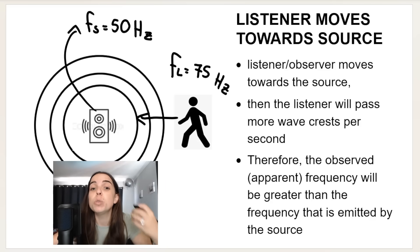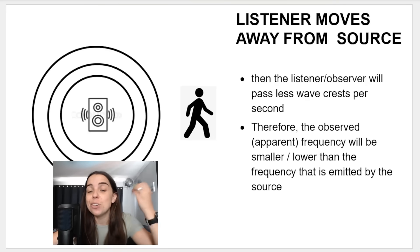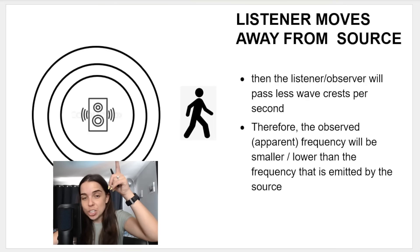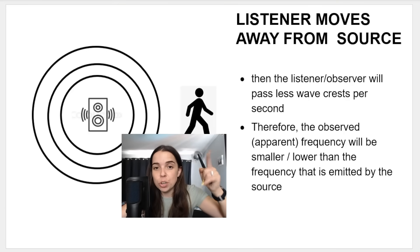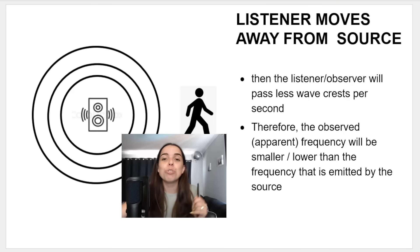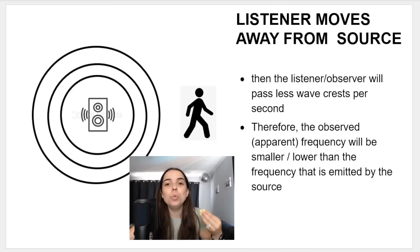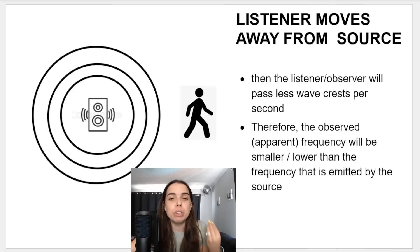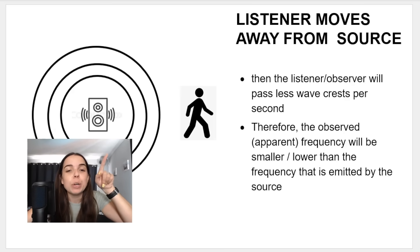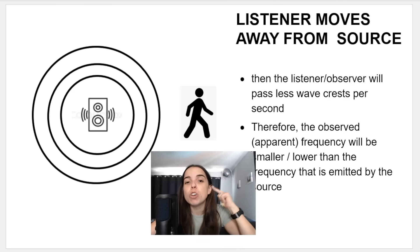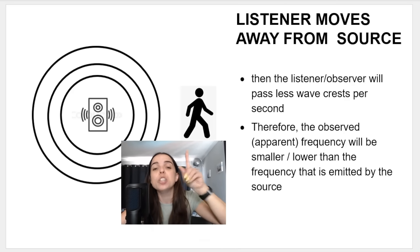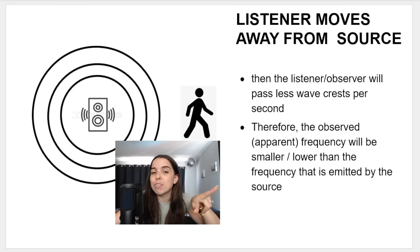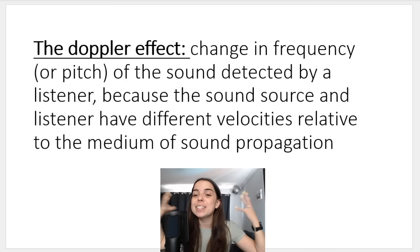It also depends on the speed with which you are walking. And if you, the stationary source's listener, walk away from the source, you will observe fewer wave crests per second. Therefore the observed frequency will be lower than what is emitted by the speaker — maybe 30 hertz instead of 50. And all of this is the Doppler effect.